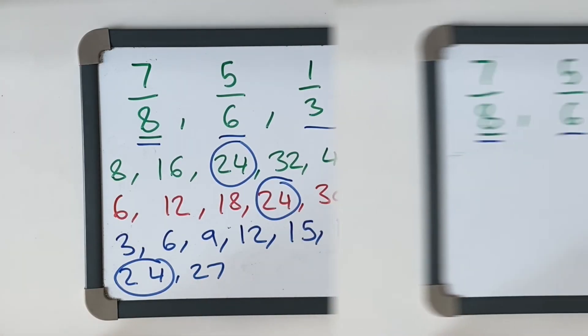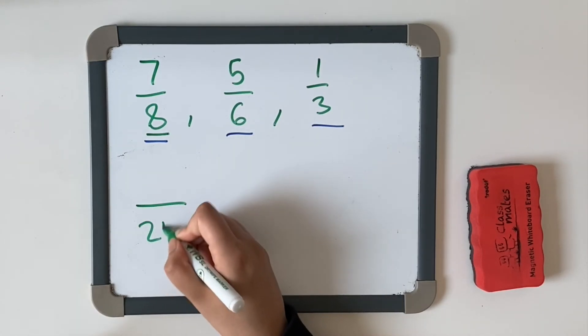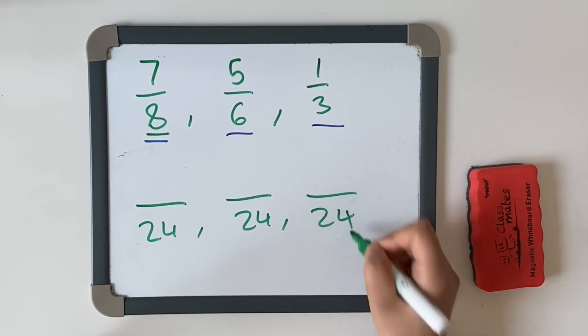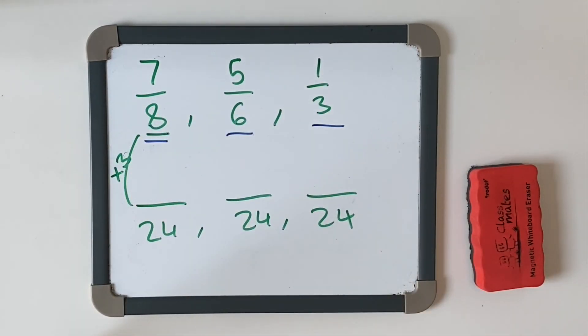Let's make a start. So we're going to use 24. Let's put 24 over there. And let's use our technique that we've learned on how to convert. So how many eights go into 24? Eight, 16, 24. You multiply it by 3. Seven times 3 is 21.